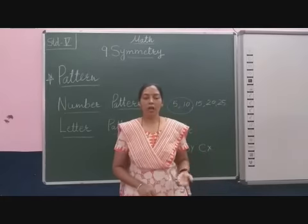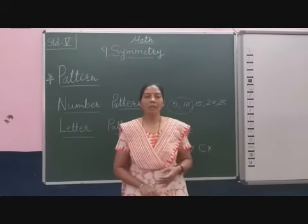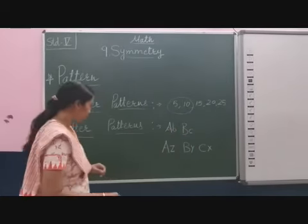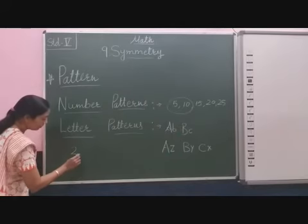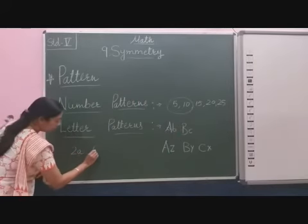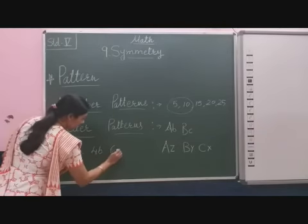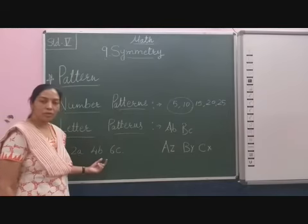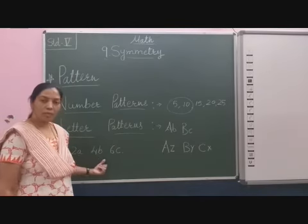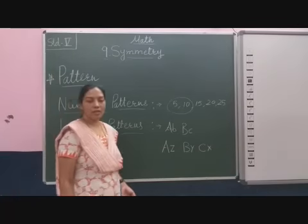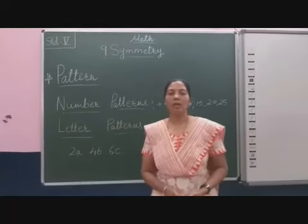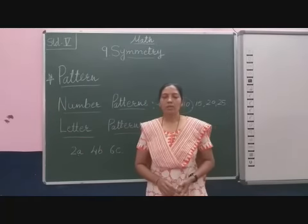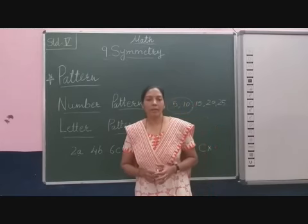Sometimes you have seen patterns that use numbers as well as letters together. For example: 2A, 4B, 6C — here the multiples of 2 and the letters are both used. So 2A, 4B, 6C — this pattern uses both numbers and letters, and we call it a number and letter pattern. Students, today we will focus only on the number pattern.